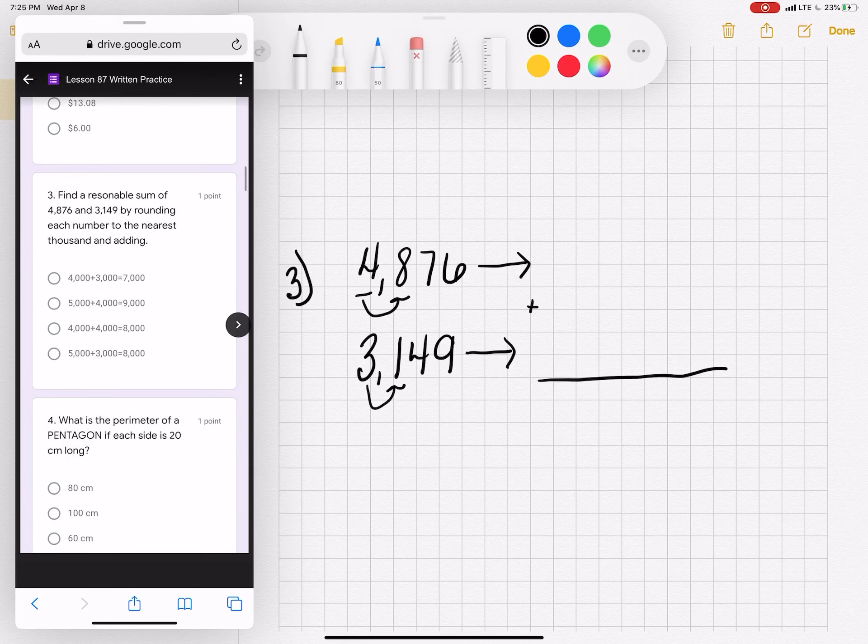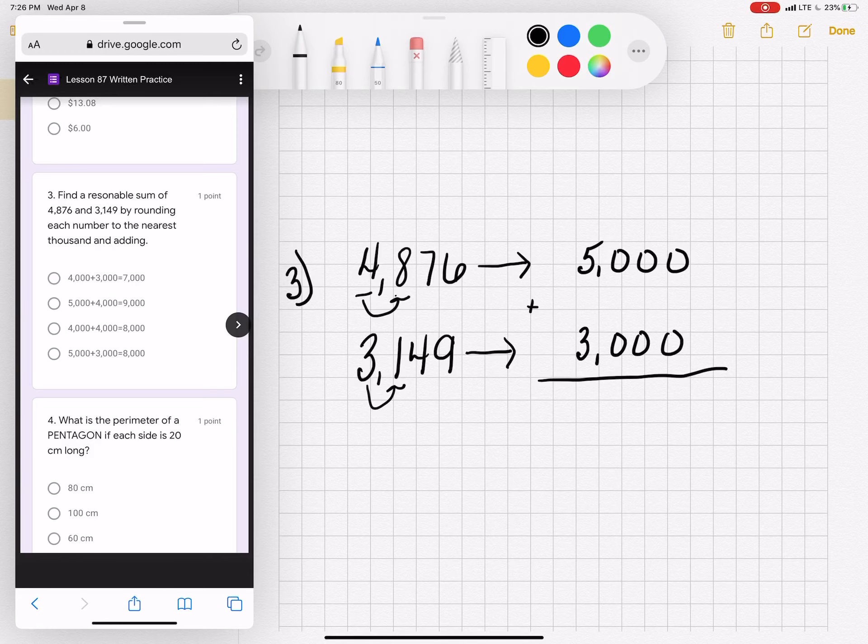Number 3. Find a reasonable sum of $4,876 and $3,149 by rounding each number to the nearest thousand and adding. 8 causes $4,000 to become $5,000. 1 causes $3,000 to stay the same at $3,000. Adding these two rounded numbers will give you the estimate of $8,000.